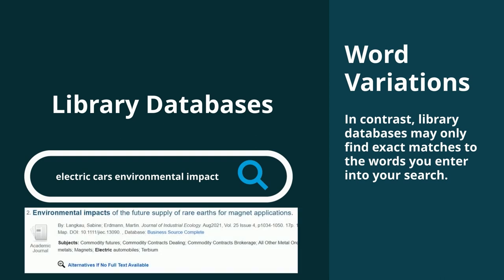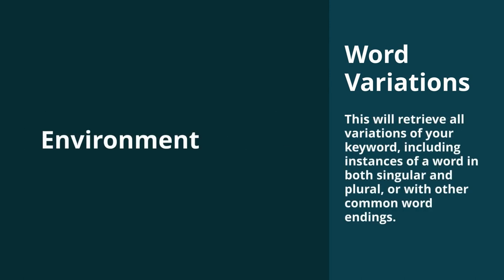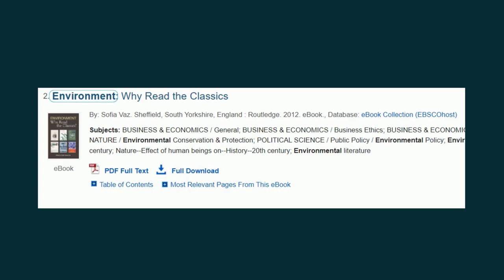Here, only articles containing the word 'environmental' are found. To capture variations of your keyword, use truncation. To truncate, keep the main part of the word and replace the end with an asterisk. This will retrieve all variations of your keyword, including instances of a word in both singular and plural, or with other common word endings. Books and articles containing any variation of that word will be found for you.